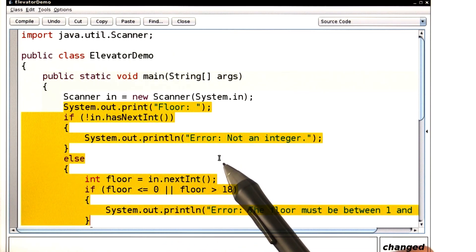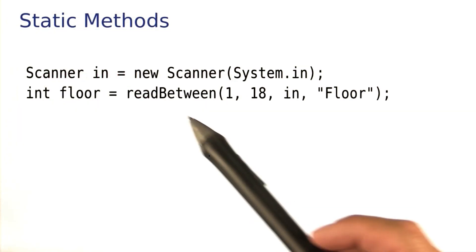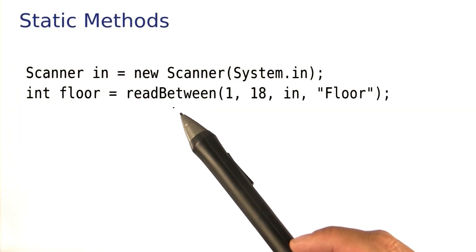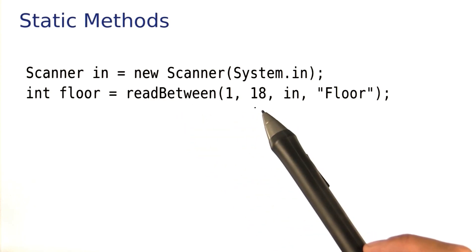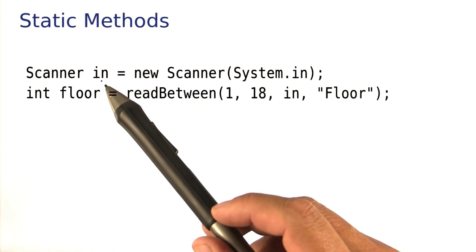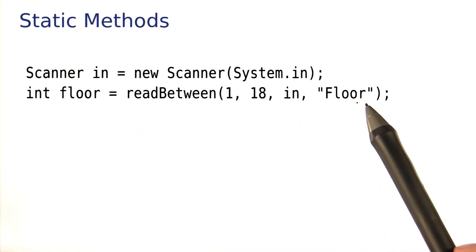It would be nice if we could put all of this code in a separate method. And then I'd like to call that method in somewhat this fashion. So I want to read a number between 1 and 18, I want to read it from the scanner, and I want to have the prompt be floor.